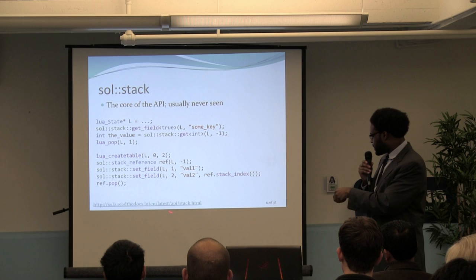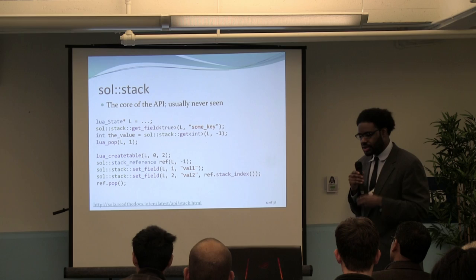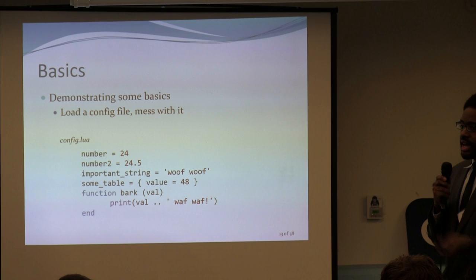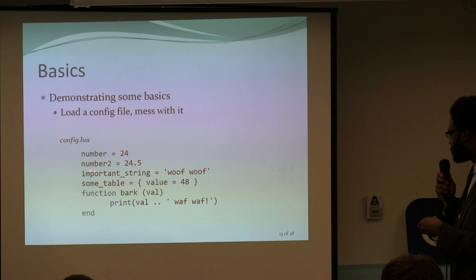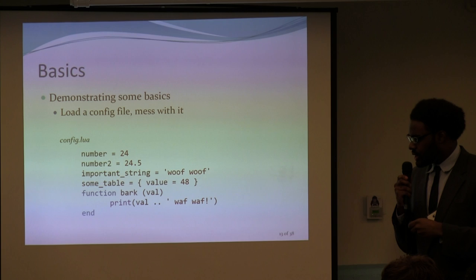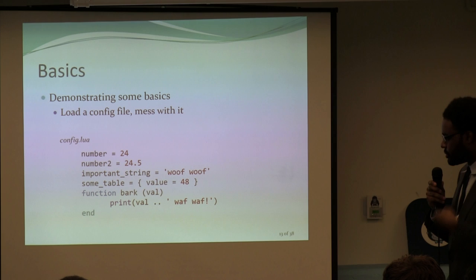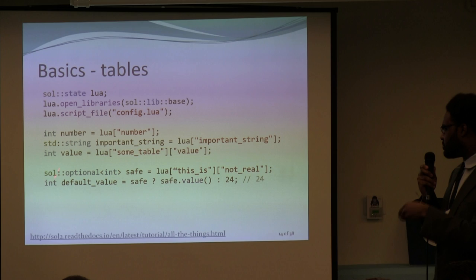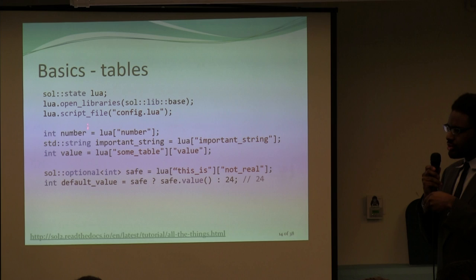Here's where we wanted to end up. Here's a basic config.lua with some numbers, a string, a table, and a function. We want to be able to read stuff from this in a nice C++ way. So this is how you load up a script and start reading numbers. As you can see, this starts to look remarkably close to what your Lua code would look like — you declare a state called 'lua', open some libraries, load the file, and then access values with square bracket notation.